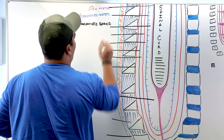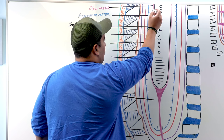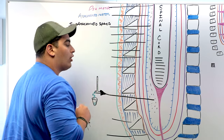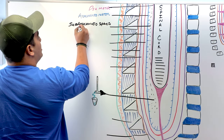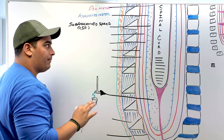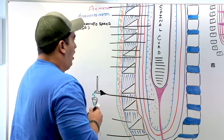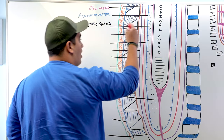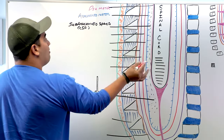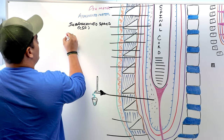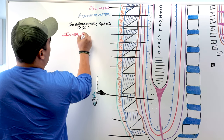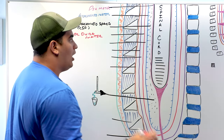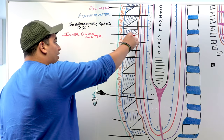The subarachnoid space is really important because that's where the cerebrospinal fluid is — that's what we need to extract during a lumbar puncture. Moving outward, the next layer in red is our inner dura mater, also called the meningeal layer of the dura mater. Remember that name: meningeal layer of the dura mater.